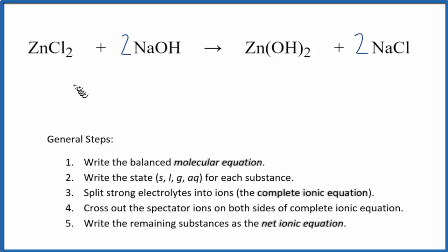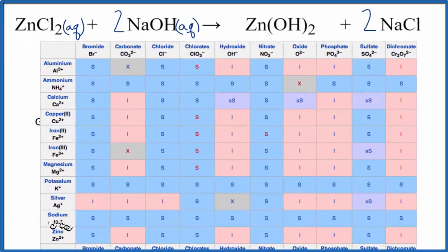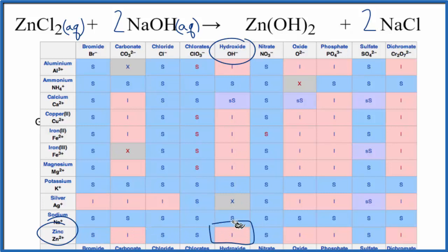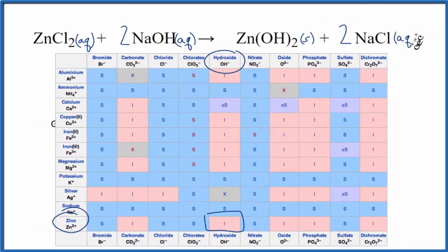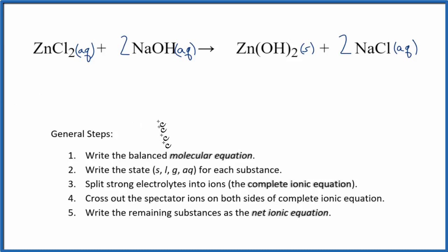Next, we need to write the states. Zinc chloride is going to be soluble, so we say it's aqueous — it'll dissolve in water. Chlorides are very soluble. Sodium hydroxide is a strong base; it's going to dissociate into its ions, it's soluble — aqueous, dissolved in water. Zinc hydroxide we should look up, since hydroxides often are not soluble. Looking at a solubility table, we find zinc and hydroxide, and we see that it's insoluble. If it's insoluble, it's not dissolved — it's a solid at the bottom of the beaker or test tube, so we write a little S for solid. You could also call this a precipitate. For sodium chloride, chloride's very soluble, so we put aqueous after that — it will dissolve.